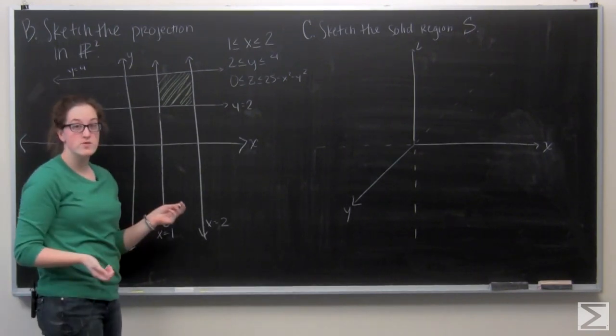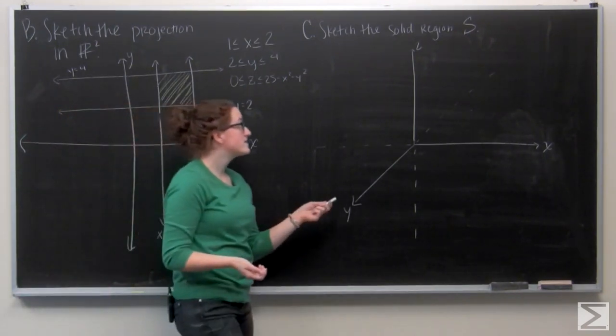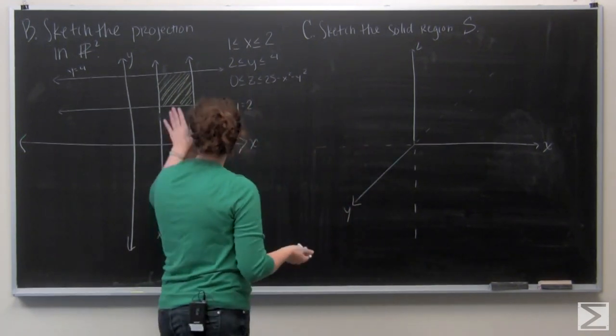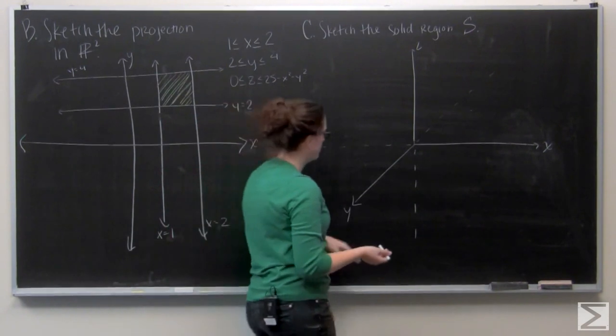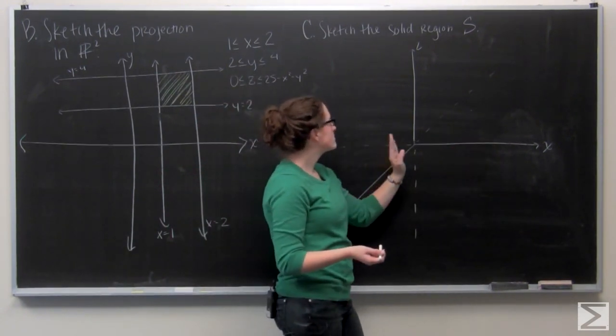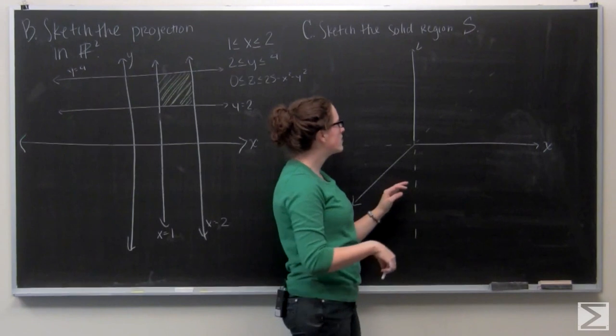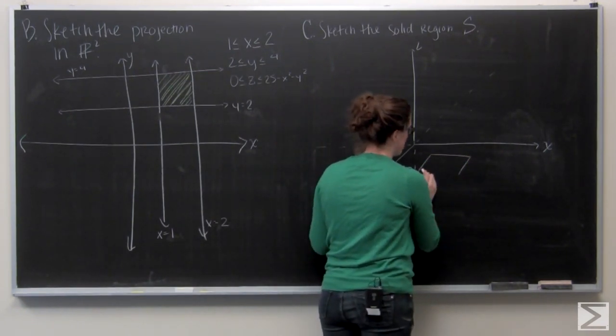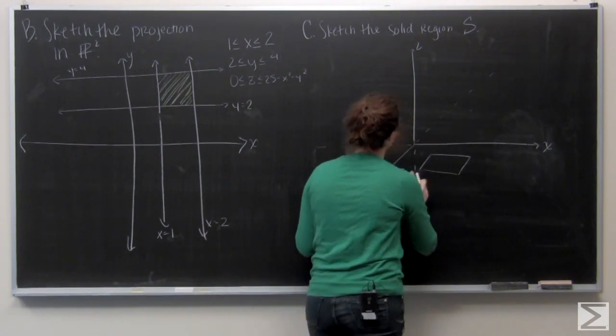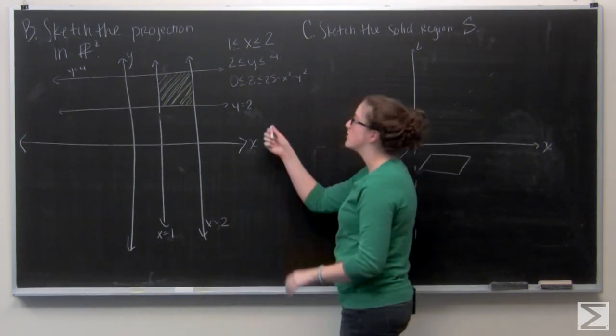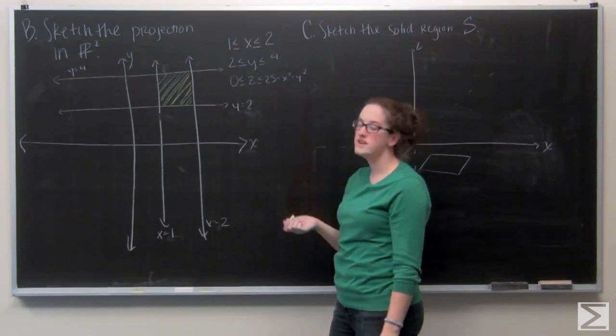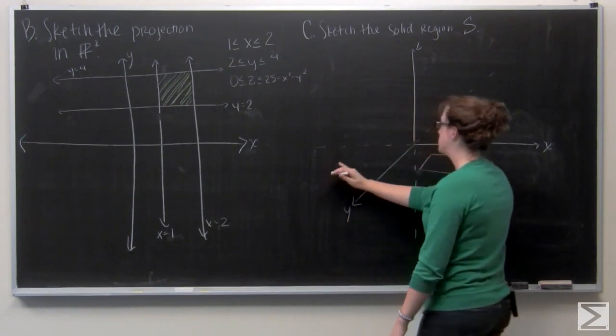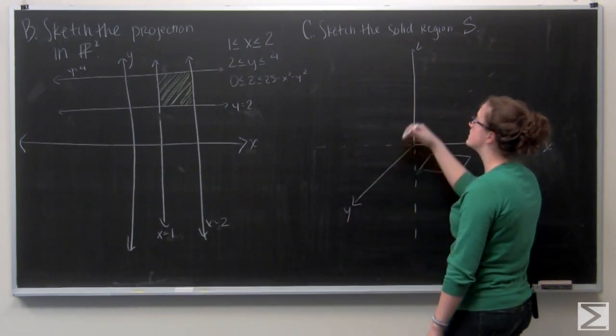Let's think about that as we move on to part C, which asks us to sketch the solid in R3. First let's think about this projection into R2. Here's our positive x and our positive y. I'm just going to draw that rectangle again. Now we're bound by z equals 0 and z equals 25 minus x squared minus y squared. Z equals 0 is just the xy plane, so we're only going to be looking up.